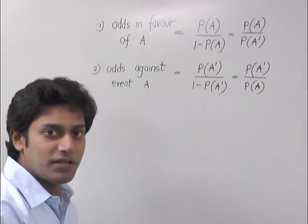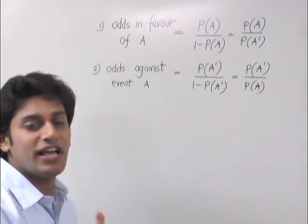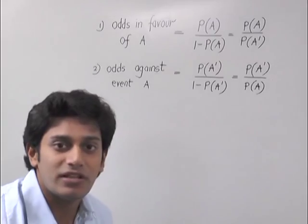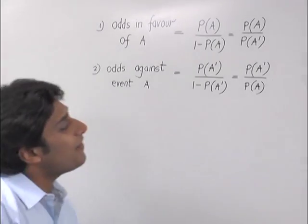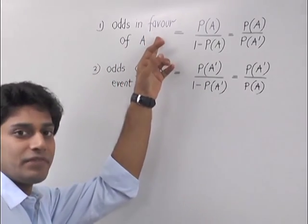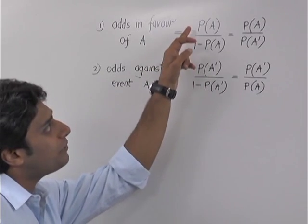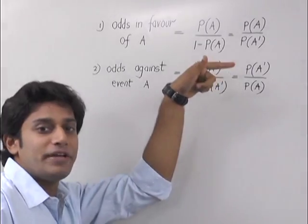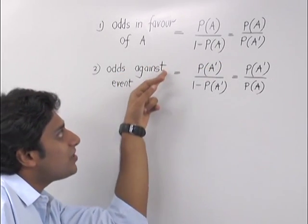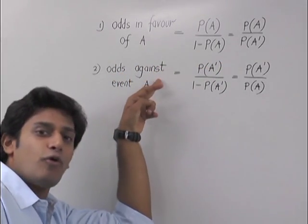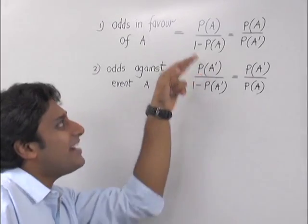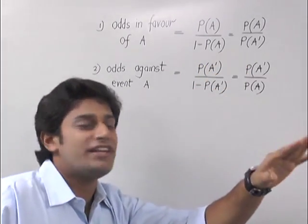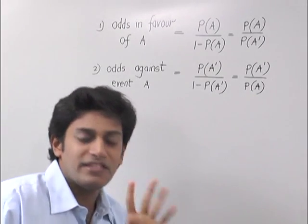Shortcut. Formula doesn't even need to be remembered. So if I say that odds are in favor, it will be the event A upon its complement. And if it's against, if against is there, then it is A dash, that is the complement upon the regular event, P of A. This is what you are going to remember.